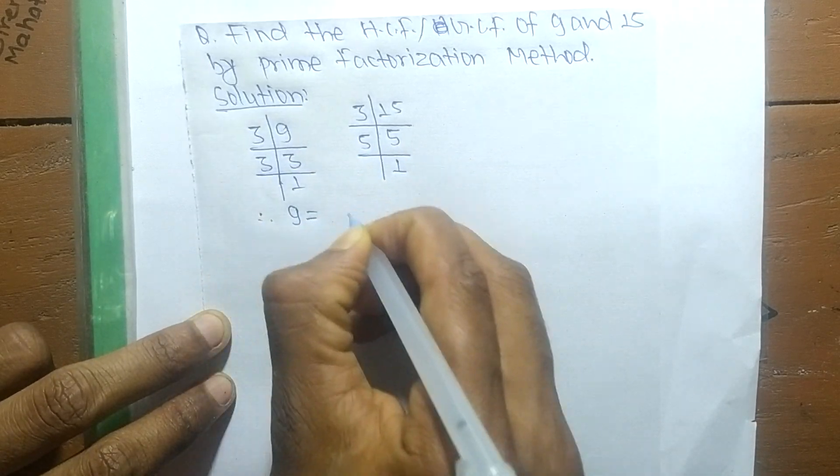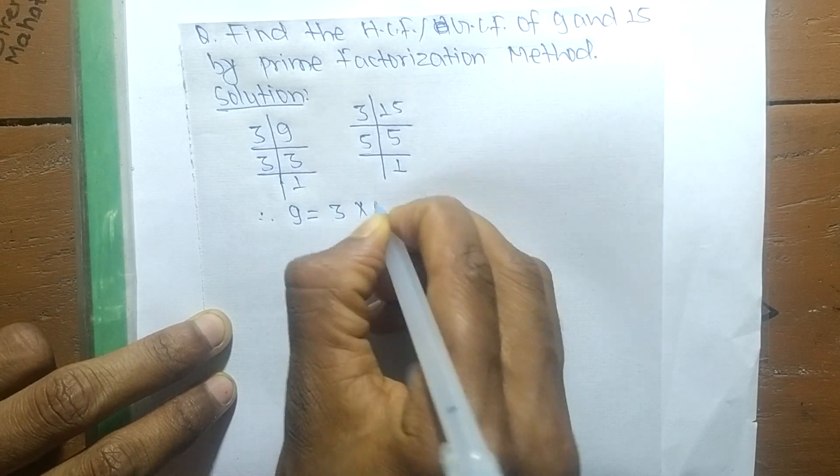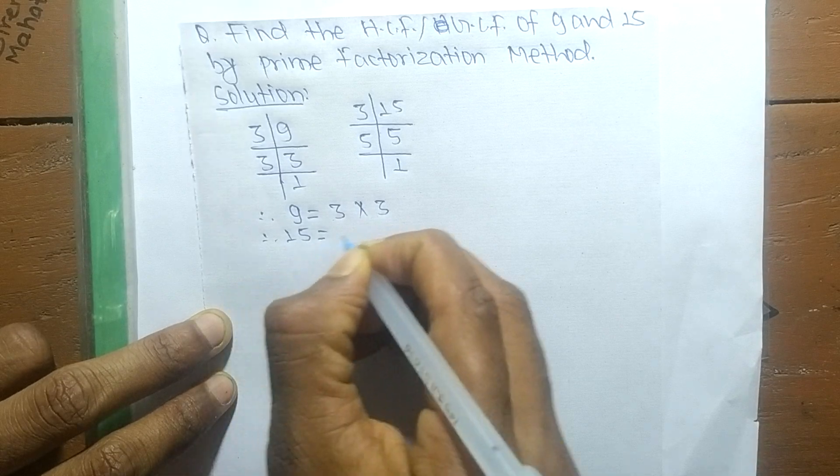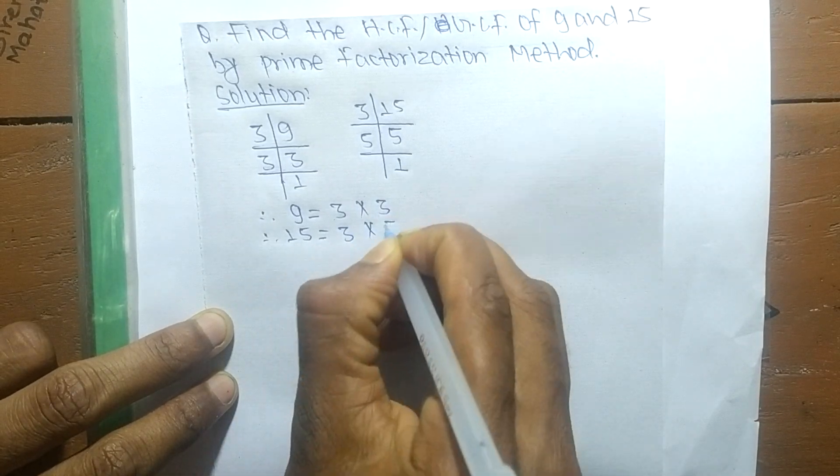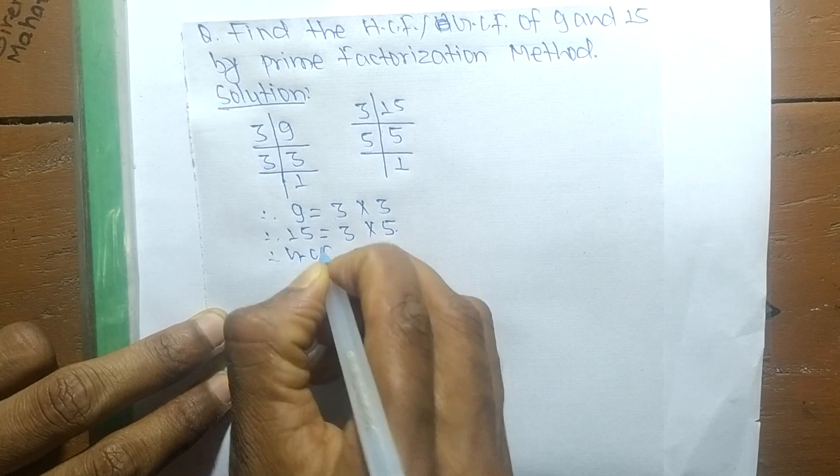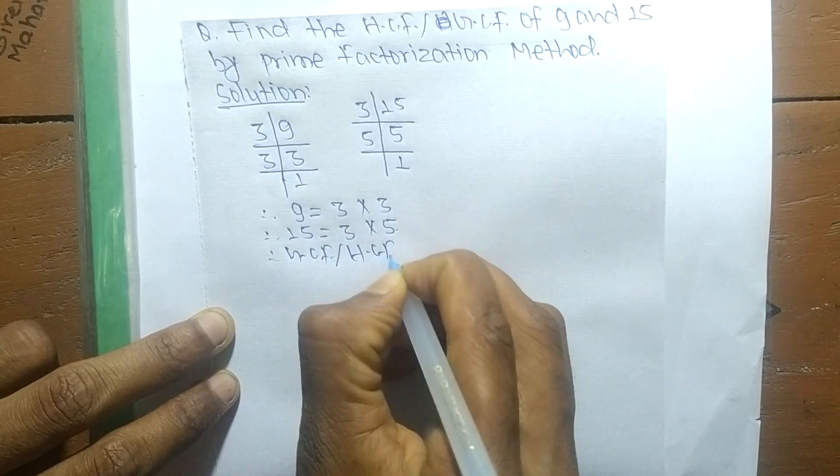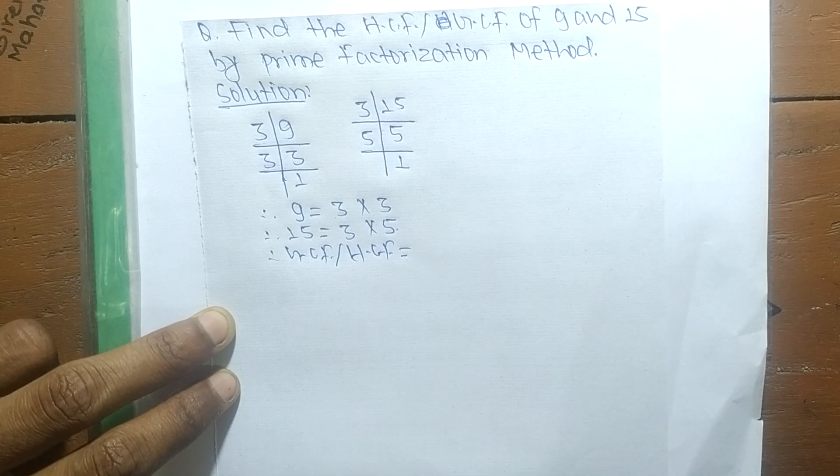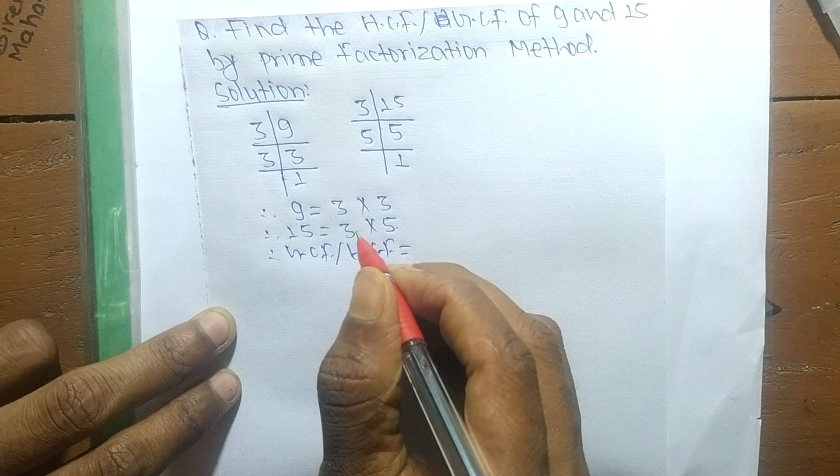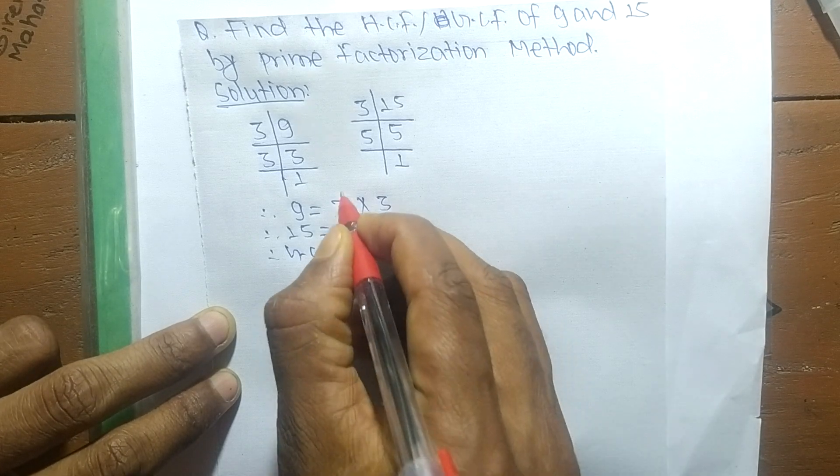So GCF or HCF is equal to... Now we determine the common factors in both the prime factors. The common factor here is 3, and the only common factor is 3.